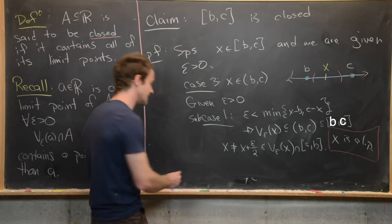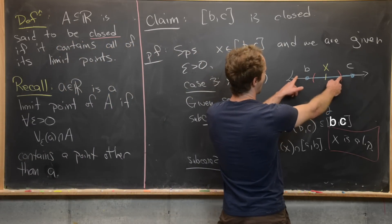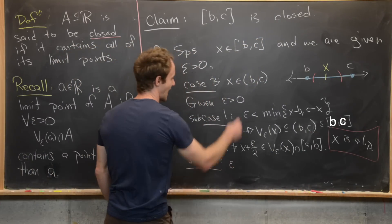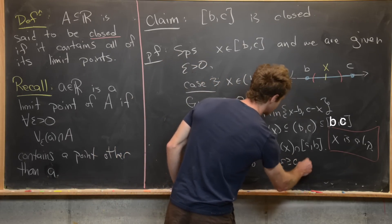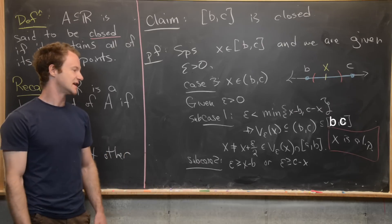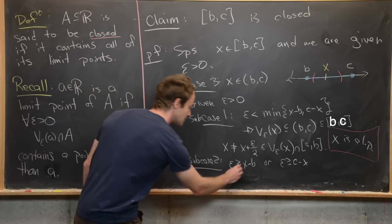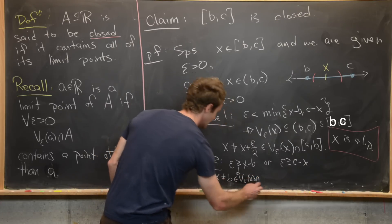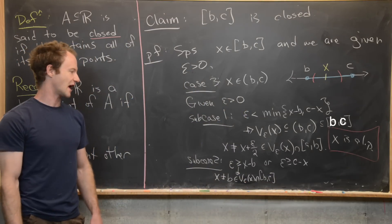Sub-case two: epsilon is greater than or equal to X minus B, or epsilon is greater than or equal to C minus X — meaning the epsilon neighborhood extends past the left or right endpoint. If epsilon is greater than X minus B, then B, which is not equal to X, is an element of the epsilon neighborhood intersected with [B,C], which is exactly what we need. Something similar holds in the other sub-case.